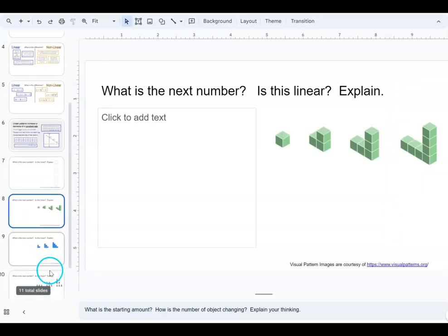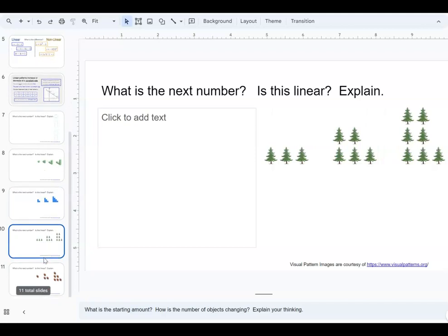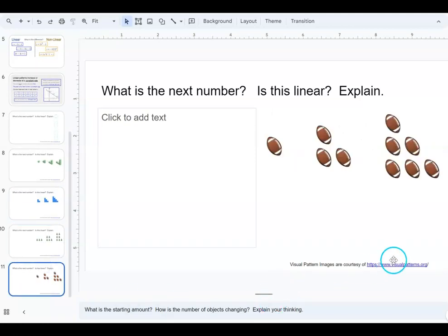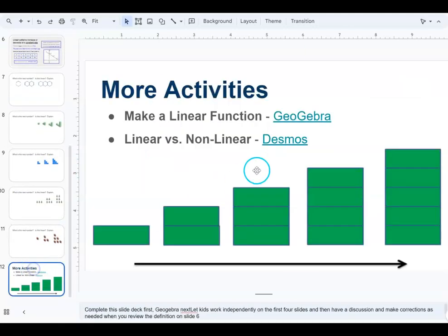Here's another one, linear or not, and so forth. So these are the patterns. I did get these from visualpatterns.org so the link is there if you want to go get additional patterns. Remember I told you I try to limit to five questions that are exactly alike and that's exactly how many I gave here. Once they're finished with this we're going to look at their next two activities.